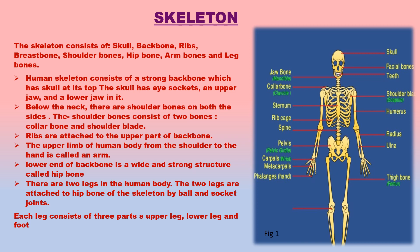The skeleton holds the whole body together and gives it a shape. It protects many delicate internal organs such as brain, heart, lungs, liver and spinal cord from outside damage. The skeleton provides numerous points for the attachment of muscles, and along with muscles, helps in the movement of body parts and locomotion.